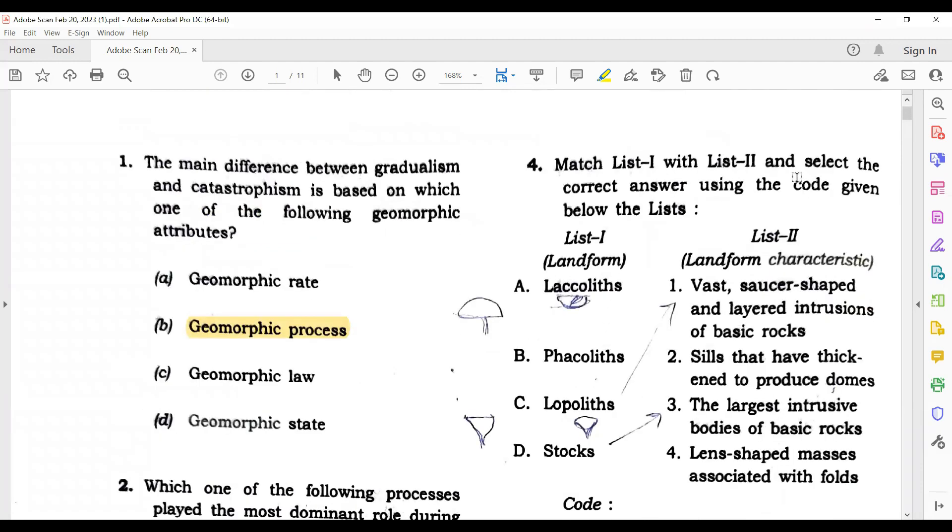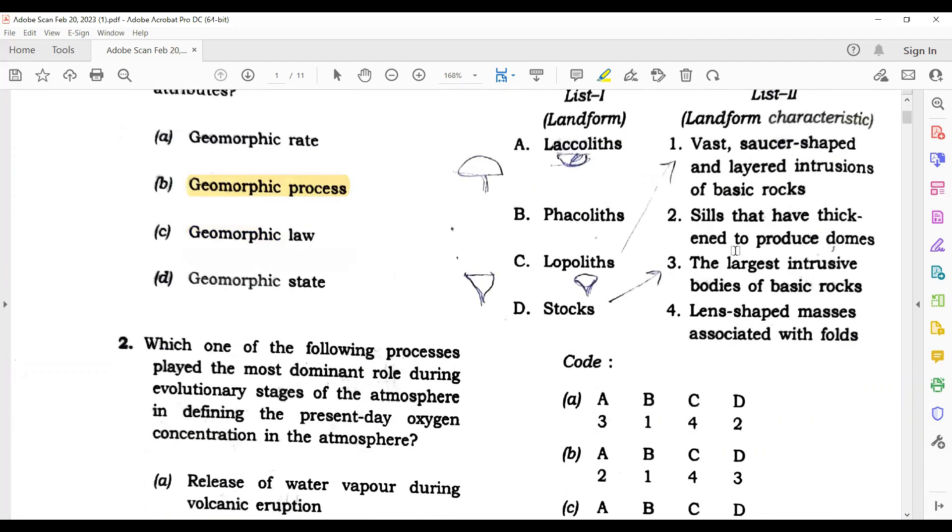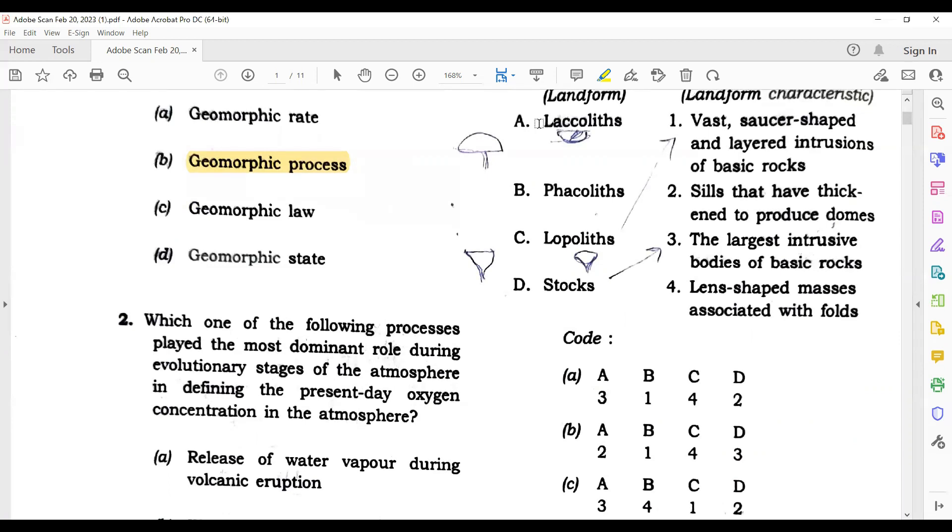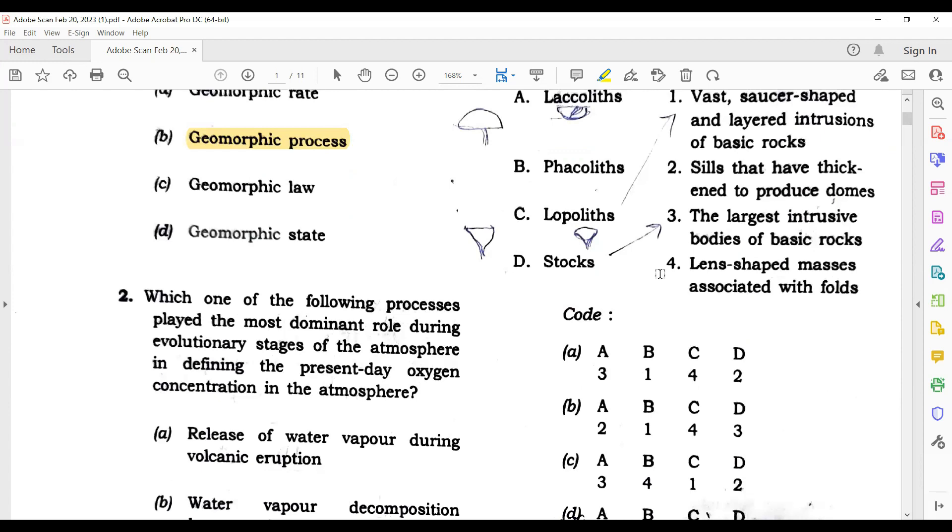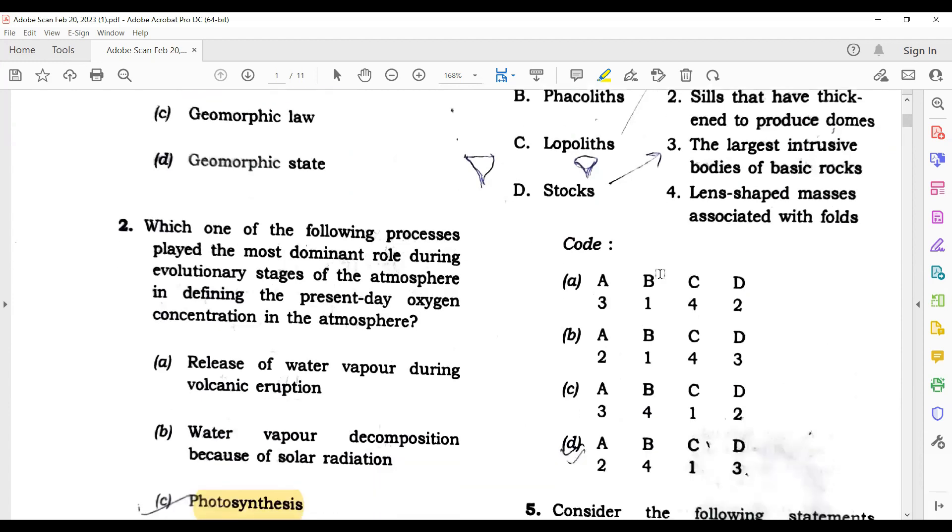Fourth question - match list one, match list two. This is a very simple question from Indian structures. So here laccolith, lopolith, phacolith, stocks. This is a very simple question and its correct answer is D.